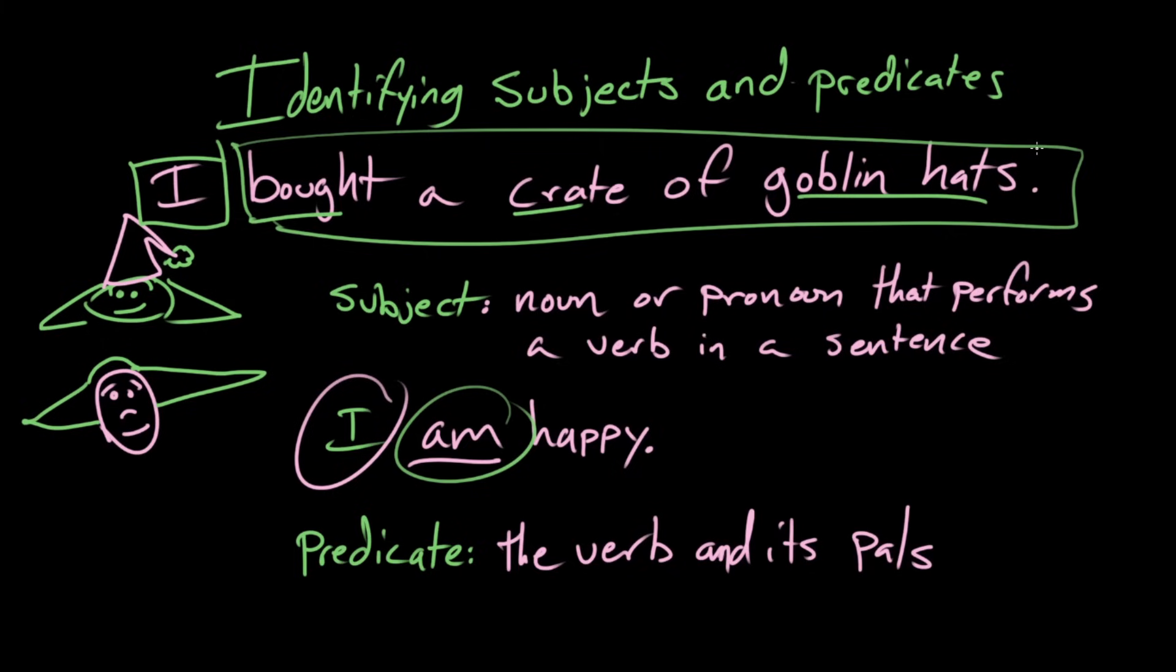So I think, Paige, I think that covers everything except exactly what a goblin hat is. But we can talk about that some other time. Yeah. So that's identifying subjects and predicates. You can learn anything. David out. Paige out.